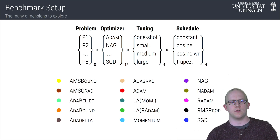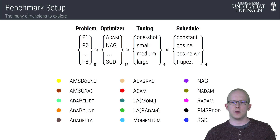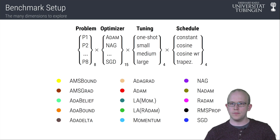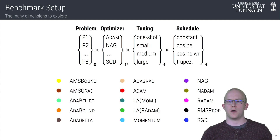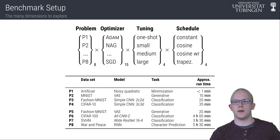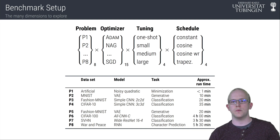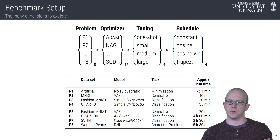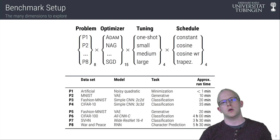We tested 15 of the most popular optimization methods. These include traditional methods such as SGD and Adam, but also recent methods such as Lookahead, AMSBound, and AdaBelief. All optimizers were tested on eight different test problems, which range from simple ConvNets to Wide ResNets, VAEs, and RNNs.